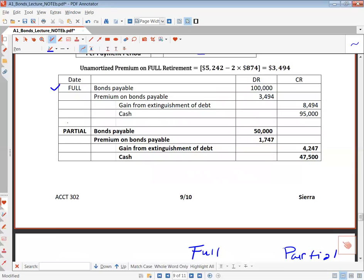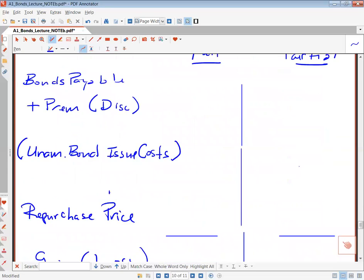So up here, you have the journal entry, and that's fine, you can do a journal entry like this, and this would be your plug number here, so you would end up calculating or putting in the face value, calculating the unamortized premium, calculating the price, the repurchase price, and then plugging a credit for a gain and a debit for a loss.